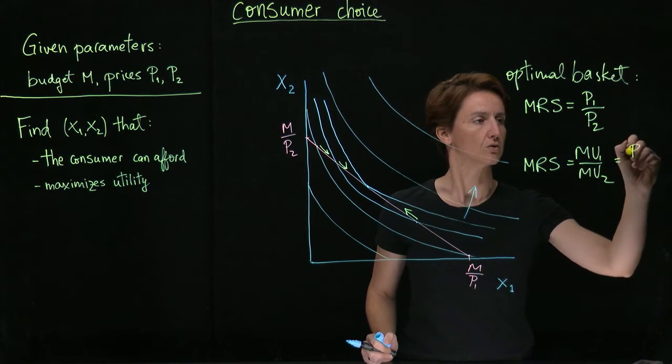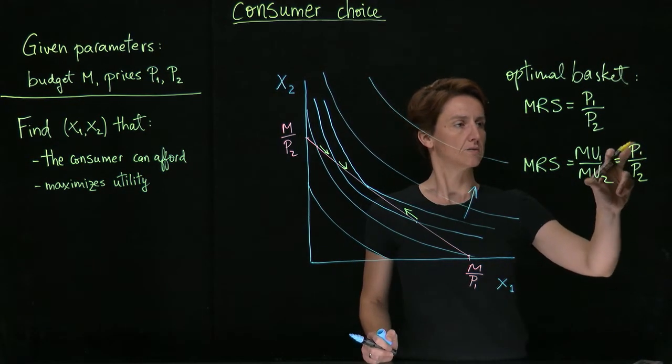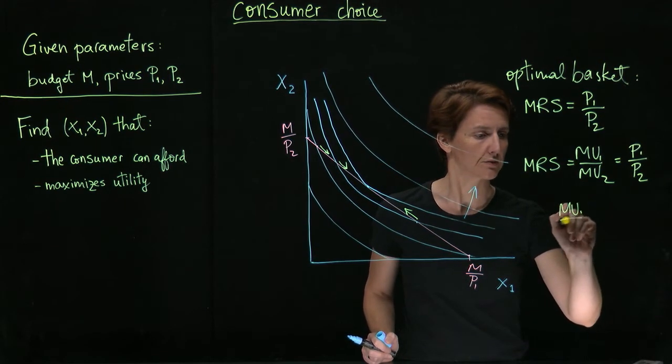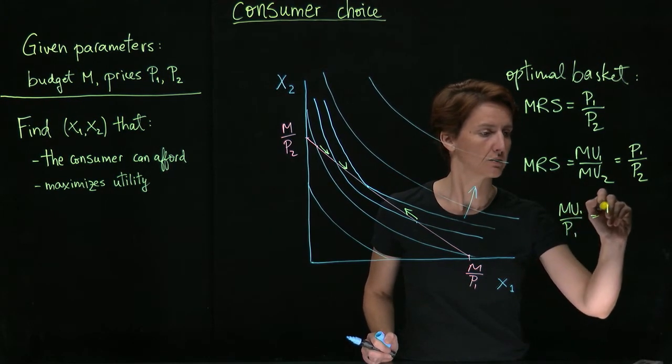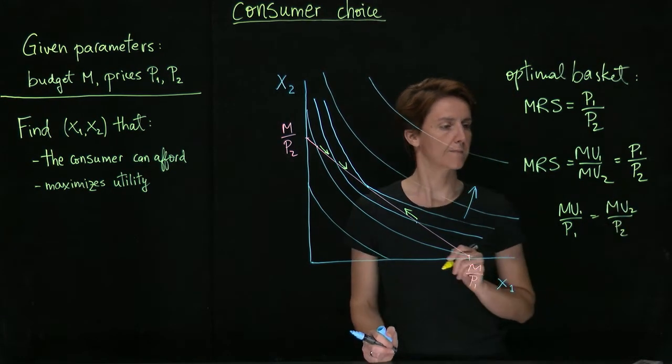Then, if we set that equal to the ratio of prices, we can rewrite this equation as MU1 over P1 equals MU2 over P2.